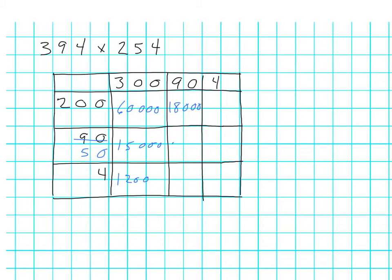50 times 90 is going to be 4,500 and 4 times 90 is going to be 360. And our last column, 200 times 4 is going to be 800. 50 times 4 is going to be 200, and 4 times 4 is going to be 16.